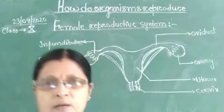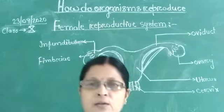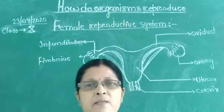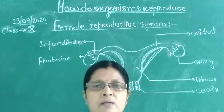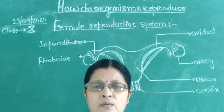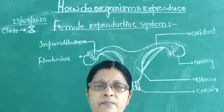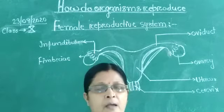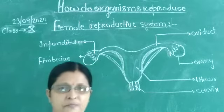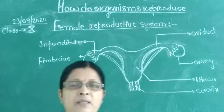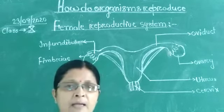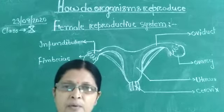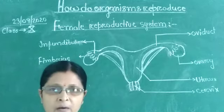Hello students of 10th class. You are most welcome in online class, subject science bio, chapter: how do organisms reproduce, topic: female reproductive system. As you know, in females reproduction takes place by a system called the female reproductive system. The female reproductive system contains the following organs.